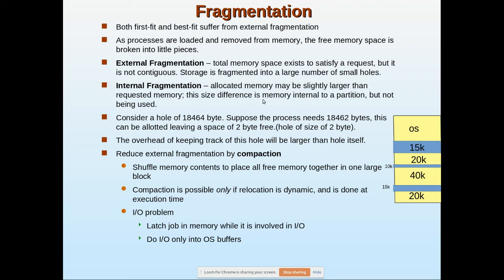Next is internal fragmentation. Suppose a process of 10k is coming and a 15k partition is available. The 10k is allocated but the remaining 5k is wasted inside that partition. For example, if we have a 15k partition and the incoming process is 12k, the 12k will be placed there but the remaining 3k cannot be allocated to any other process. This wasted space inside a partition is called internal fragmentation — allocated memory may be slightly larger than requested.